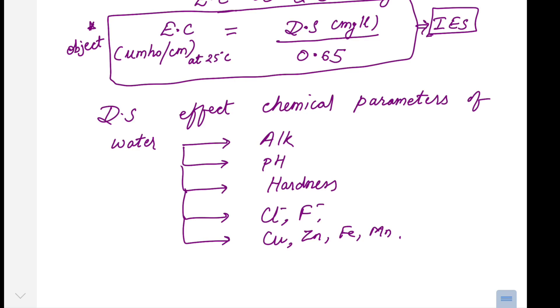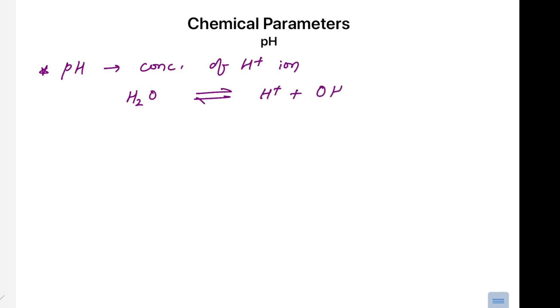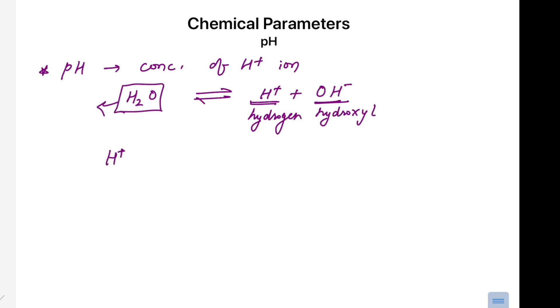pH is not a new parameter for us in engineering — we have already studied it in school and first-year chemistry. pH tells us about the concentration of hydrogen ions in water. Water dissociates into two categories of ions: hydrogen ions (H⁺) and hydroxyl ions (OH⁻). These two ions remain present in equal concentration if the water is neutral, meaning the concentration of H⁺ and OH⁻ are equal for neutral water.